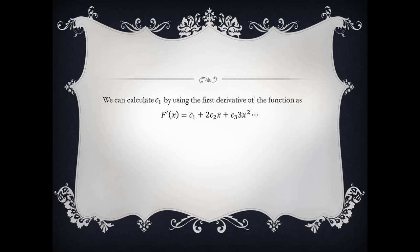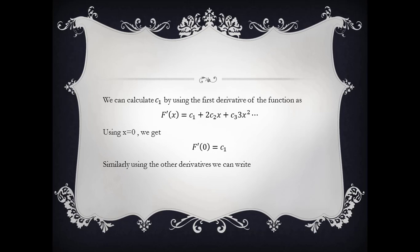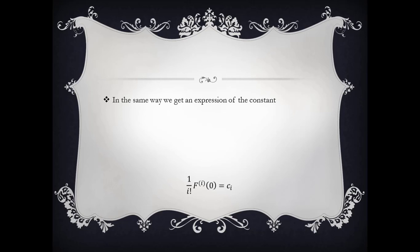You can calculate the constant C1 by using the derivative of the function. Differentiating gives f'(x) = C1 + 2*C2*x + 3*C3*x² + ... Plugging x=0 gives C1 = f'(0). Continuing in this way, we can construct a general expression for the i-th constant: Ci = (1/i!) * f^(i)(0), where f^(i)(0) is the i-th derivative of the function evaluated at x=0.